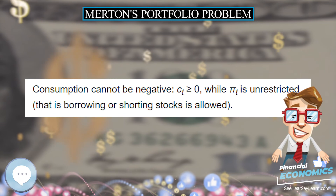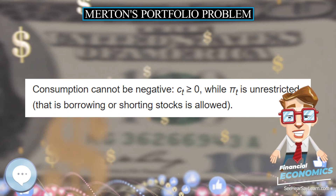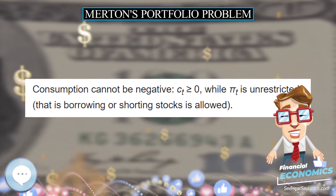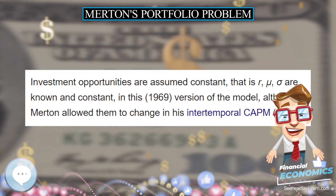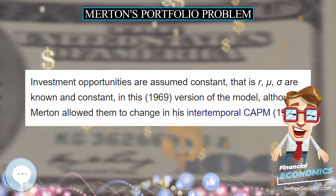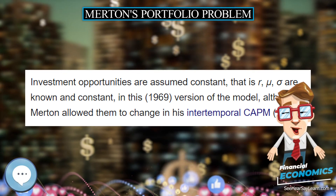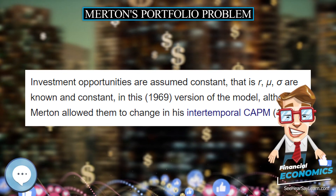The variable rho is the subjective utility discount rate.